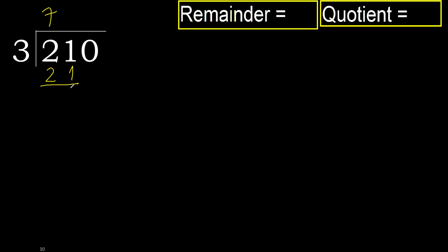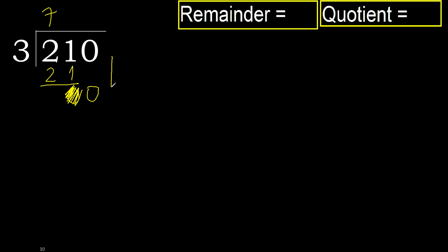21 minus 21 is 0. Eliminate 0 on this side. 0 is less, therefore next — that is not a number, therefore finish it. Therefore here complete — complete with 0, because finish it with this number.